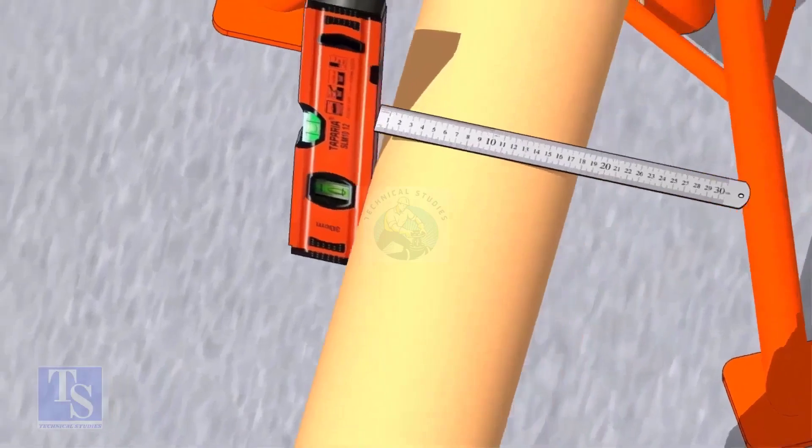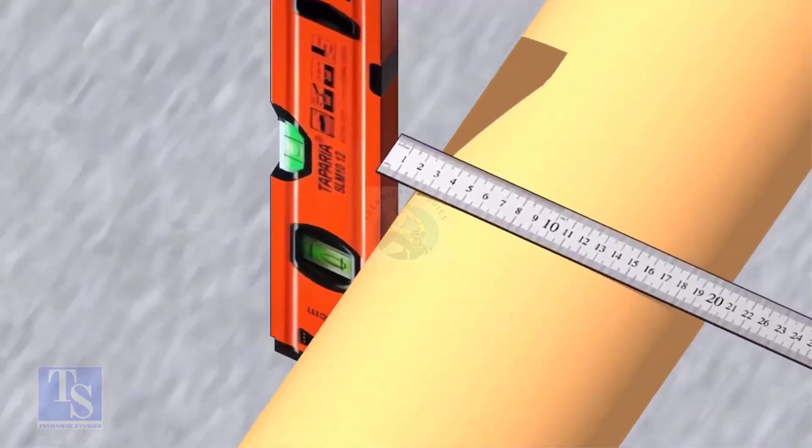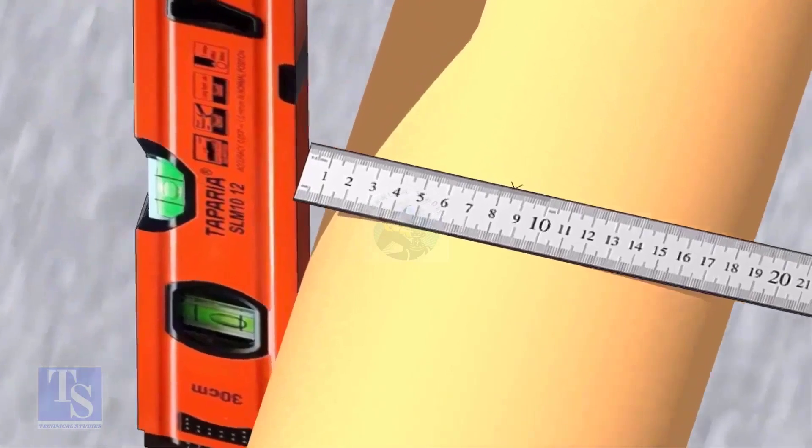Mark the center of the pipe. OD of a 6 inch pipe is 168mm, so mark the half OD 84mm as shown.